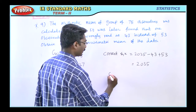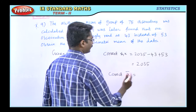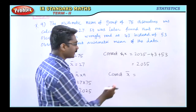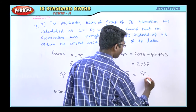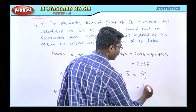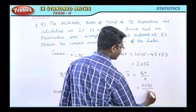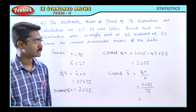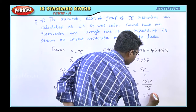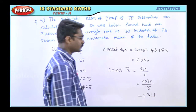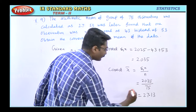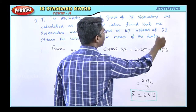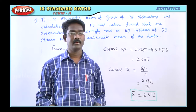So now we have the correct sigma x, which is 2035. Therefore, the correct x-bar equals the correct sigma x divided by n, that is 2035 divided by 75, which gives us 27.13. So the correct arithmetic mean is 27.13, replacing the wrong observation 43 with the correct observation 53.